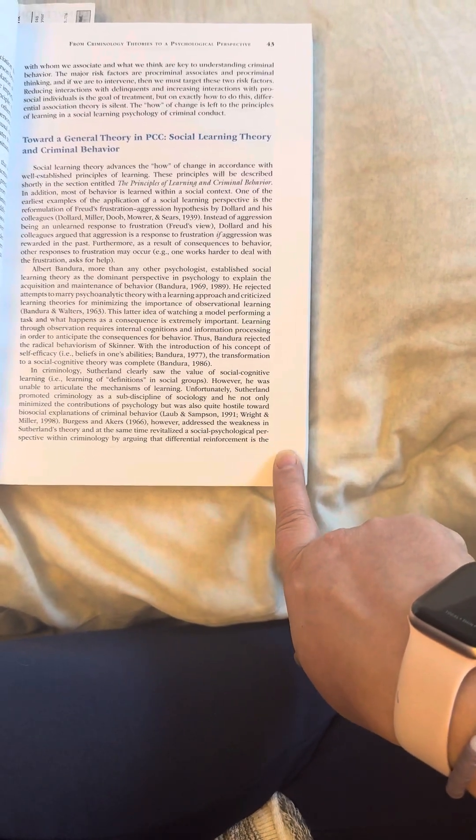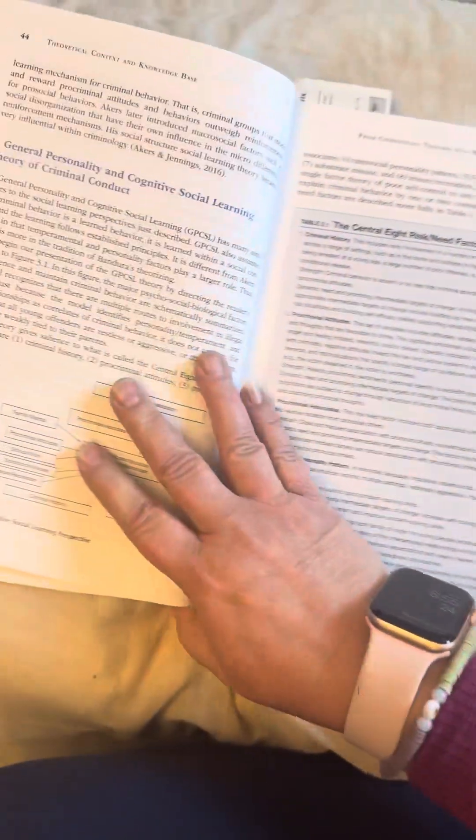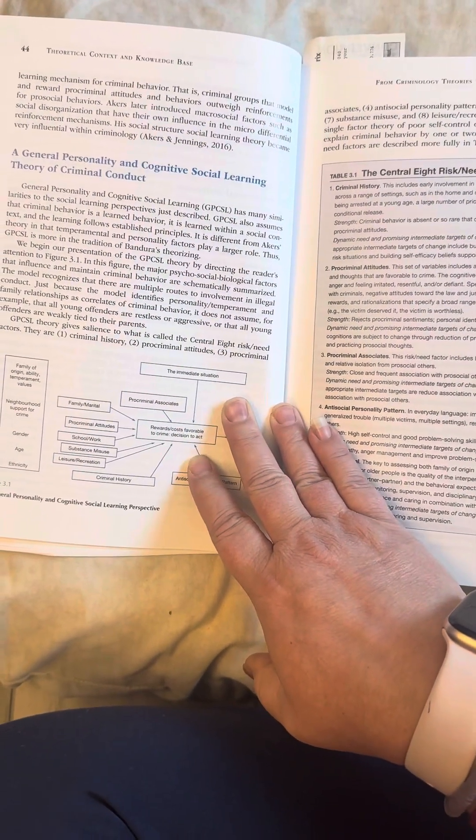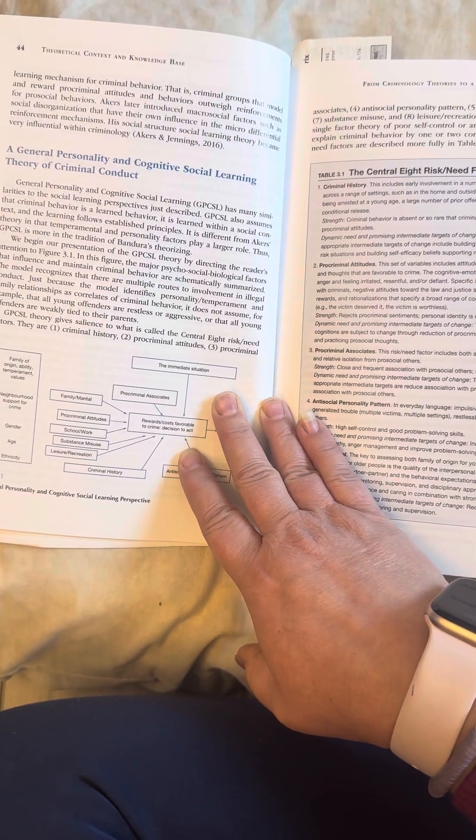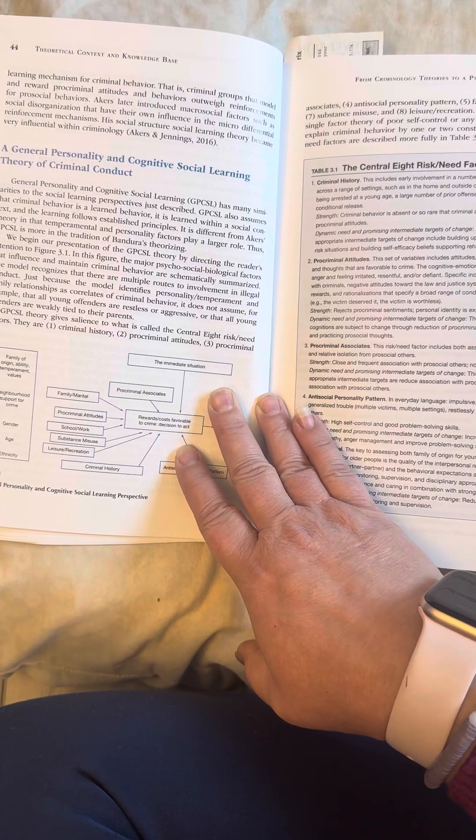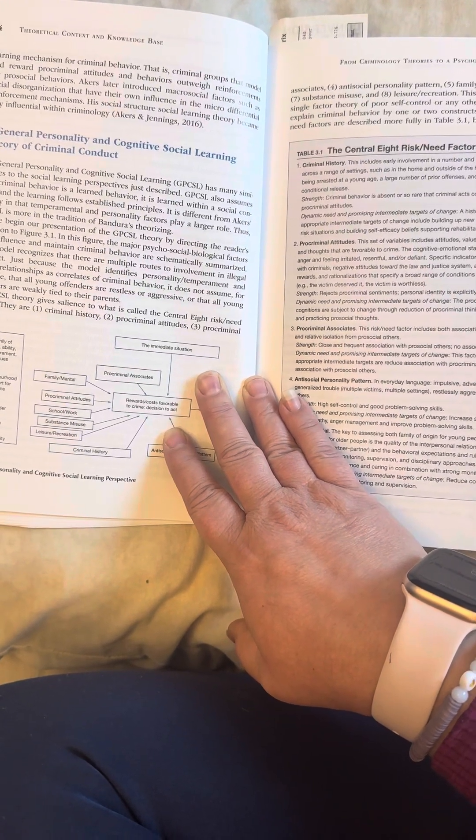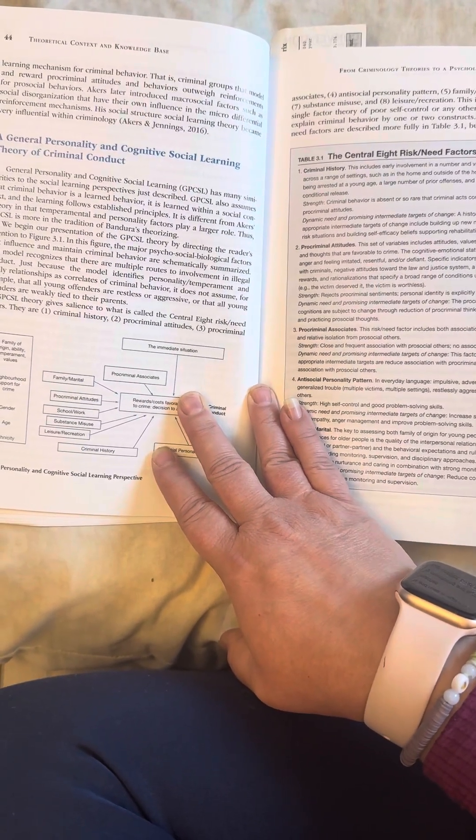Wright and Miller in 1998 addressed the weakness in Sutherland's theory and at the same time, revitalized the social psychological perspective within criminology by arguing that differential reinforcement is the learning mechanism for criminal behavior. That is, criminal groups that model and reward pro-criminal attitudes and behaviors outweigh reinforcements for pro-social behaviors. Akers later introduced macro-social factors such as social disorganization that have their own influence in the micro-differential reinforcement mechanisms. His social structure, social learning theory became very influential within criminology.